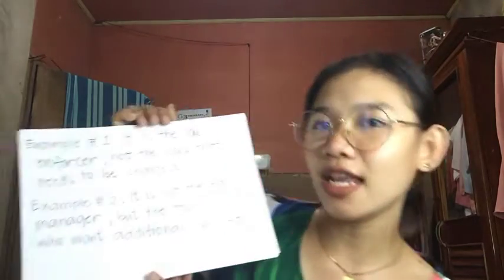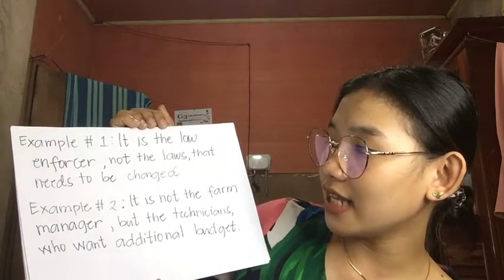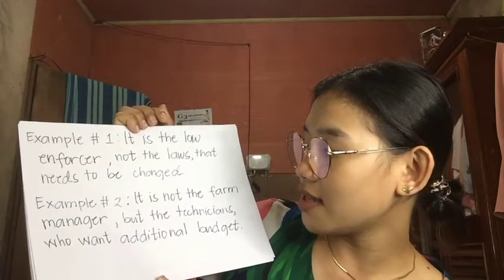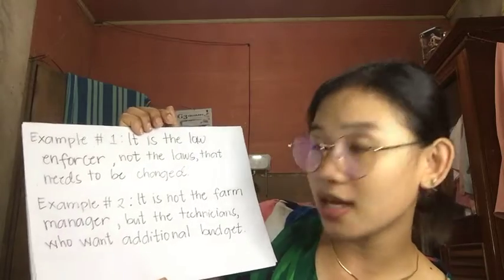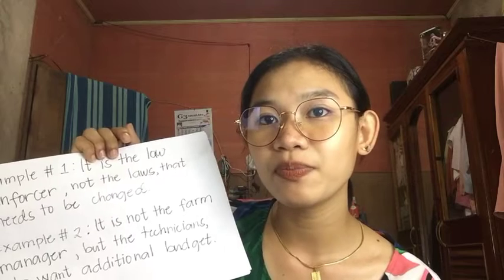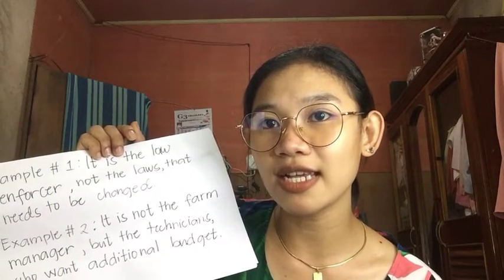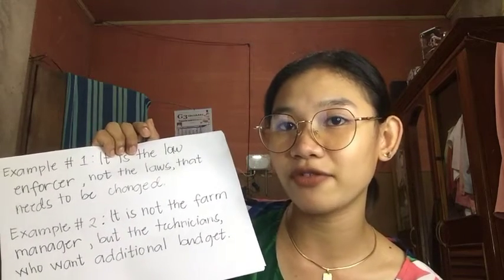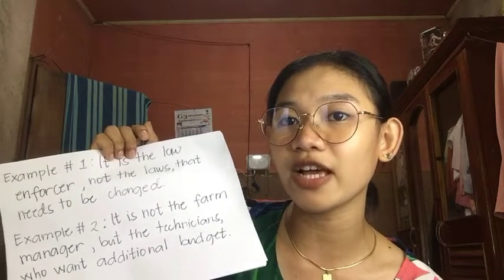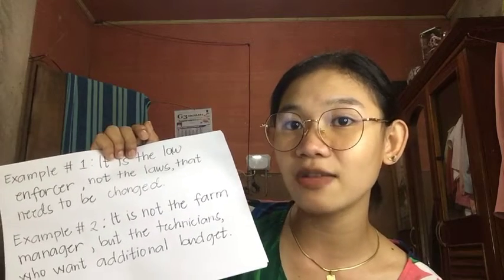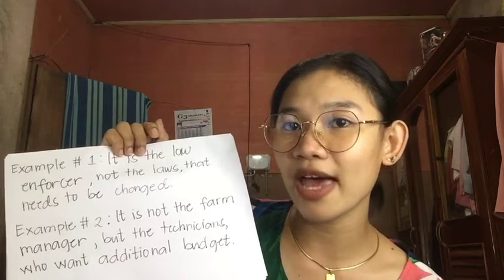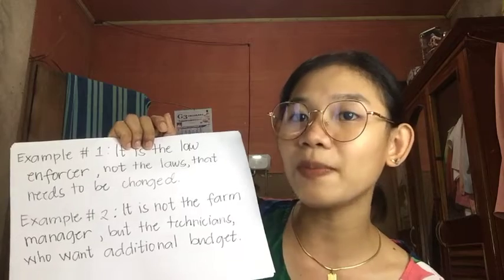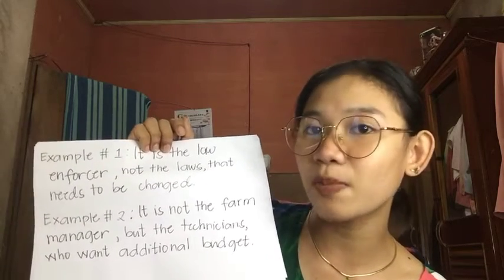Rule number nineteen: in sentences with both positive and negative subjects, the verb should agree with the positive subject. Example: 'It is the law enforcer, not the laws, that needs to be changed.' Second example: 'It is not the farm manager but the technician who wants additional budget.' The verb 'is' is a state of being verb — it does not express a specific action but describes existence — and agrees with the positive subject.